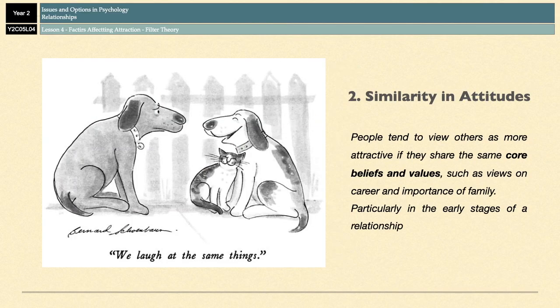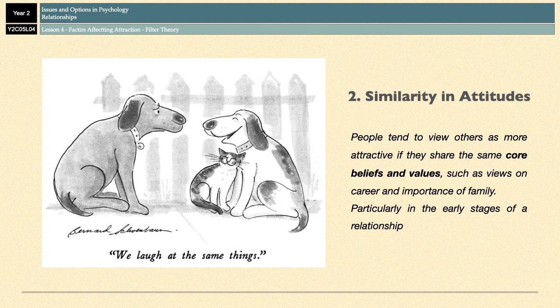The next filter is similarity in attitudes — the idea that people tend to view others as more attractive if they share the same core beliefs and values, such as views on career or the importance of family. Particularly in the early stages of a relationship, a certain degree of agreement over the basics promotes communication, which then increases self-disclosure, meaning you start talking about things that are more deep and meaningful, which then promotes the relationship and makes it become more intimate.